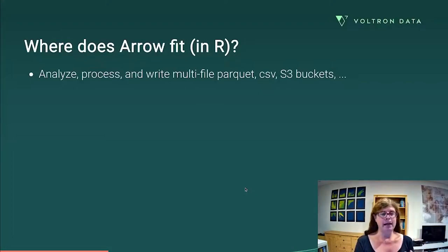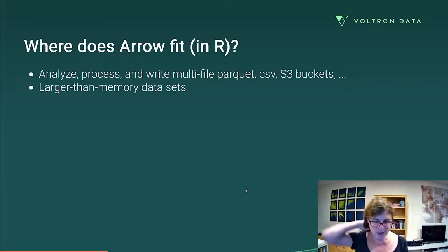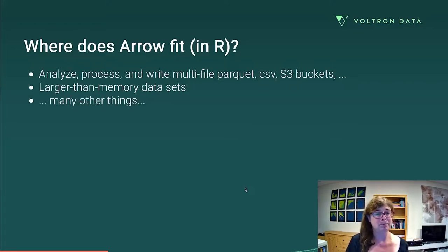So here's how Arrow makes that easier. First off, the Arrow package allows you to analyze, process, and write multi-file parquet files. It can write CSVs. You can write things from S3 buckets, and so on. Most of that, but not all of that functionality exists elsewhere in R, but this is a really powerful thing in itself. For most R users, however, the big selling point is that you can do this with larger than memory data sets. Which in R, traditionally, you can't do, because R likes to load things into memory, and yeah, that's a problem normally.